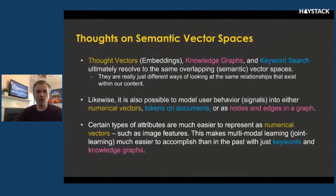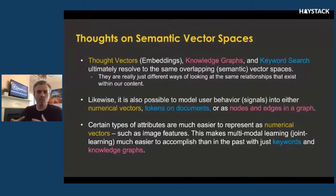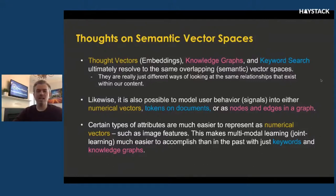Thought vectors or embeddings, knowledge graphs, and keyword search ultimately all resolve to the same overlapping semantic vector spaces. We're still dealing with the same content and the same relationships within the meaning of things in our domain — these are just different representations or techniques to get at that understanding of the semantics. Each of these are really just different ways of looking at the same relationships that exist within our content. Likewise, it's possible to model user behavior signals into either numerical vectors, tokens on documents, or as nodes and edges in a graph. Certain types of attributes are much easier to represent as numerical vectors, such as image features — this makes multimodal or joint learning much easier to accomplish than in the past.